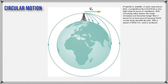If you project an object horizontally, how much will it fall in one second? It doesn't depend on the horizontal velocity you give it, because the initial vertical velocity is zero. Using the kinematic equation with V₀y = 0 and a = negative 9.8 m/s², time = 1 second, you should get negative 4.9 meters.